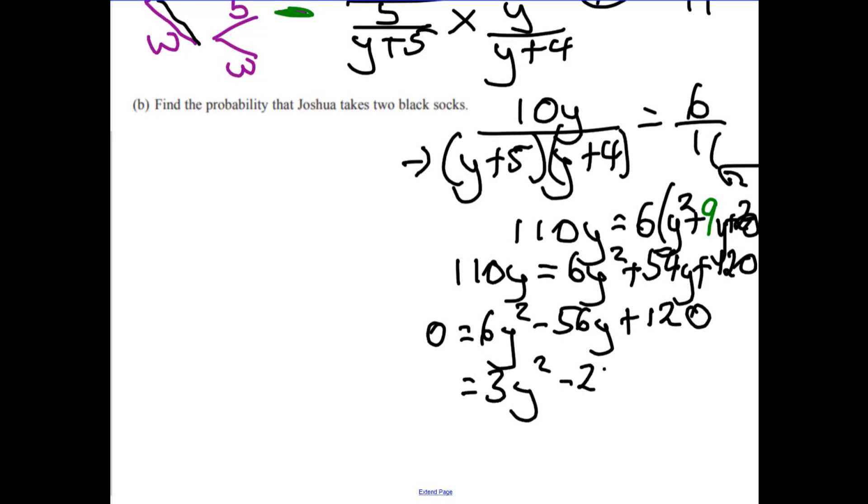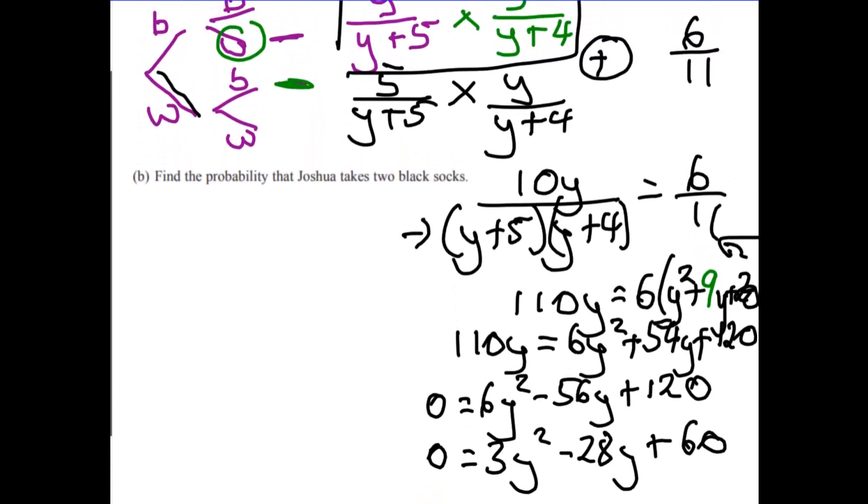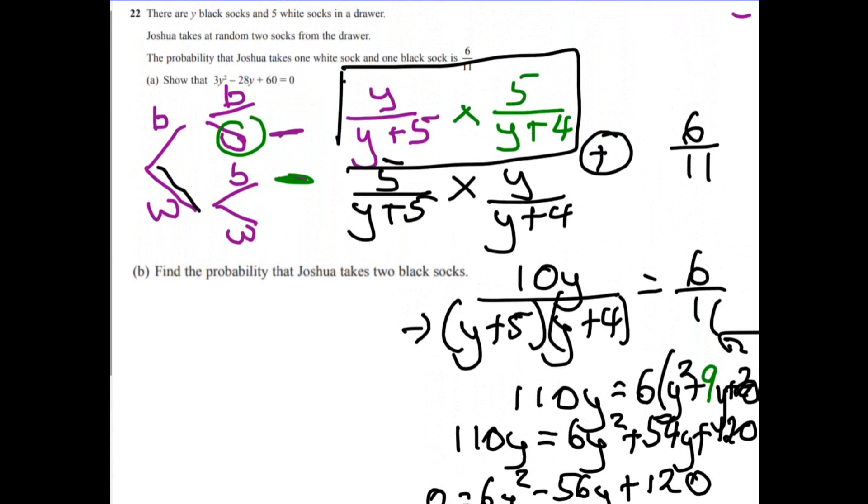So we get 3y squared, take away 28y plus 60, and we know that that is equal to zero. Okay, and that's, if you just go back up to the top of the question, that's what we were trying to get to. Now let's focus on the second part of the question.